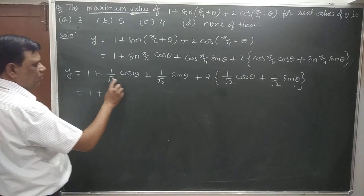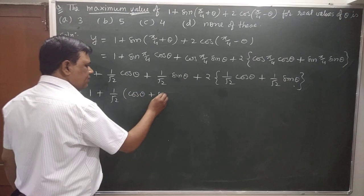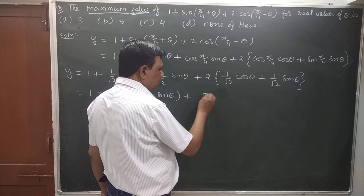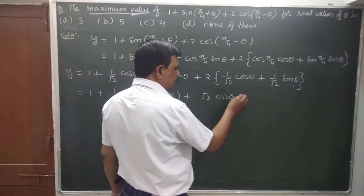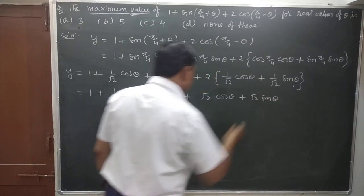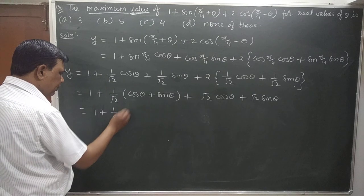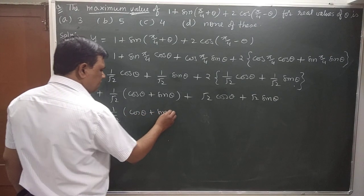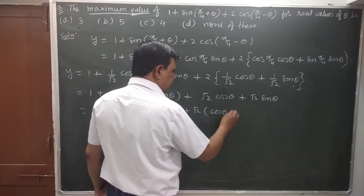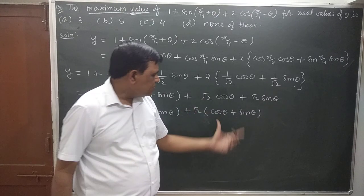y = 1 plus (1/√2)cos(θ) plus sin(θ) plus √2[cos(θ) plus sin(θ)]. Taking (cos(θ) plus sin(θ)) common.